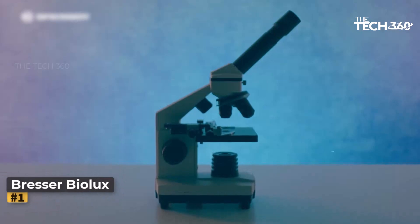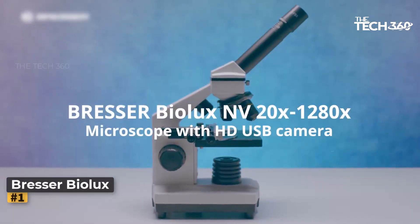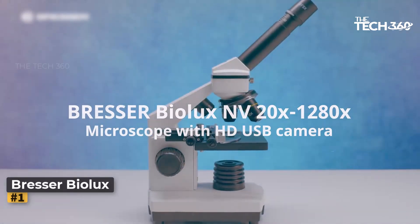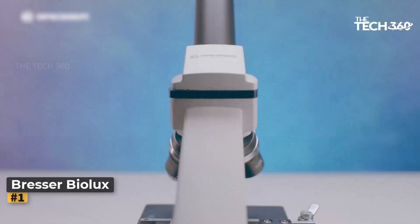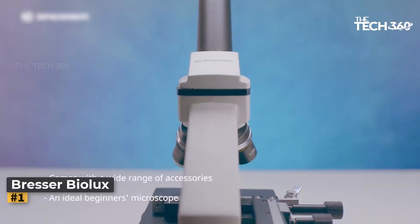Number 1: Bresser BioLux NV 20X-1280X. The Bresser BioLux NV is the perfect microscope for beginners. It comes with a range of accessories, including an LED lamp with adjustable brightness, a filter wheel with 5 colors, and various filters.